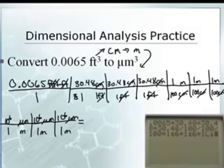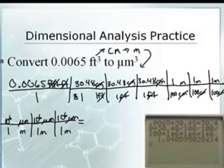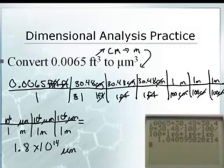It would be a big number. I typed an L for some reason — hang on, just a minute. Let's try this again: one E6. There we go. Enter. How many sig figs do I want? Two. 1.8 E14. And the units on that would be micrometer cubed.